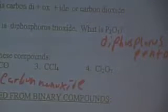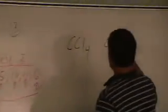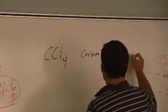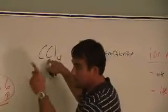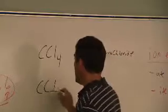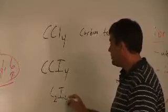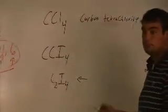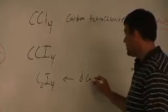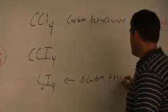What about this CC? This should be CCl4 — it is a typo. So it should be CCl4. That is carbon tetrachloride. Now, if you think about that, it's the same thing as C2I4, which would be called what? Dicarbon tetraiodide.